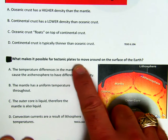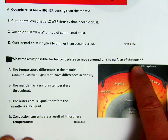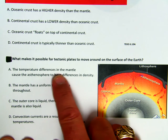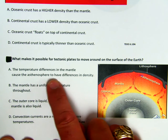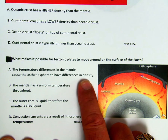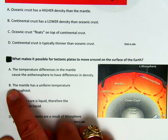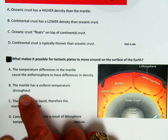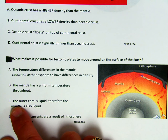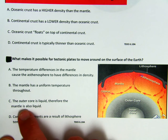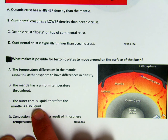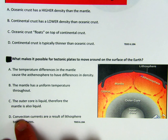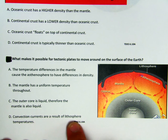What makes it possible for tectonic plates to move around on the surface of the Earth? Is it A, the temperature differences in the mantle cause the asthenosphere to have differences in density? B, the mantle has a uniform temperature throughout? C, the outer core is liquid, therefore the mantle is also liquid? Or D, convection currents are a result of lithosphere temperatures?